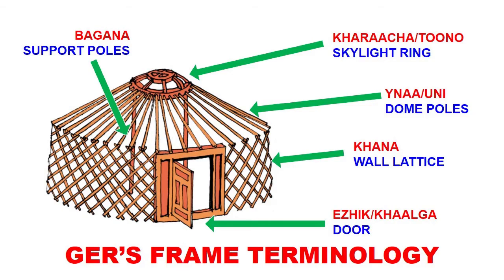We'll start with the Mongol Ghir and first we will cover frame terminology. I must apologize to my Mongol-speaking brothers because I don't know any Mongol at all. I will try to pronounce all these terms the best I could, but if I mess it up please forgive me. So the door piece is called ežik or halga.